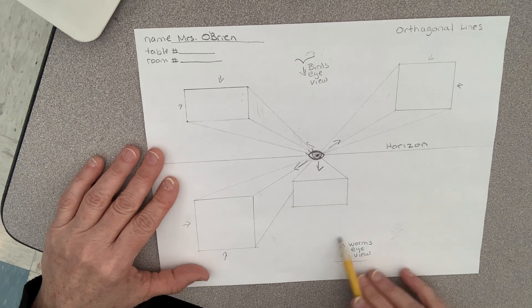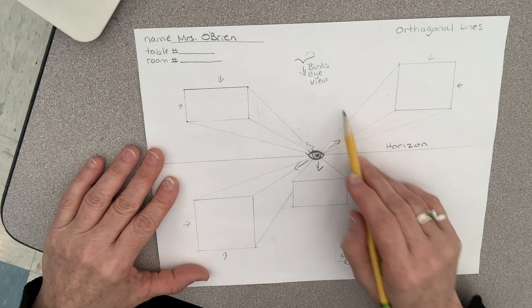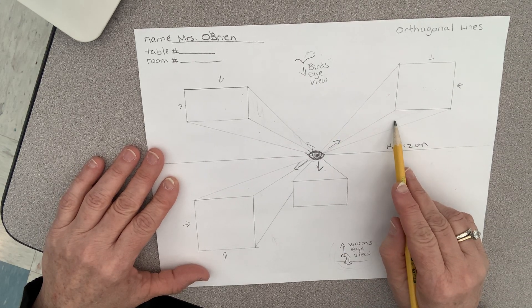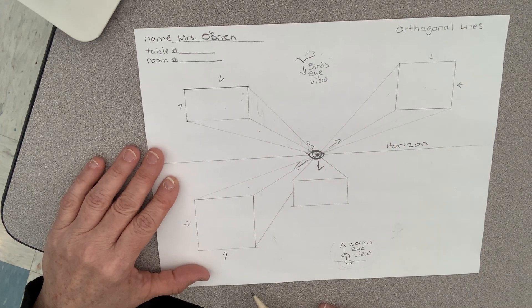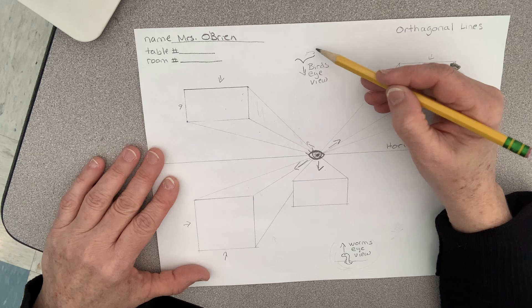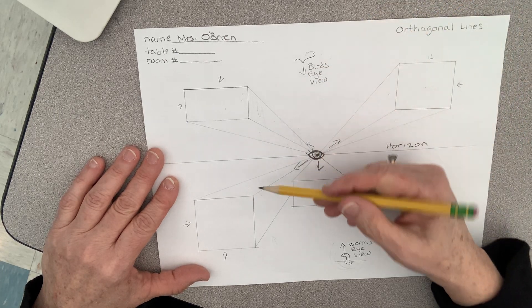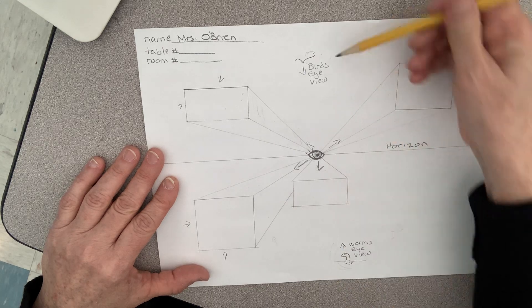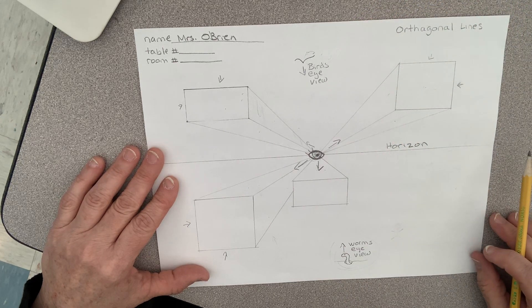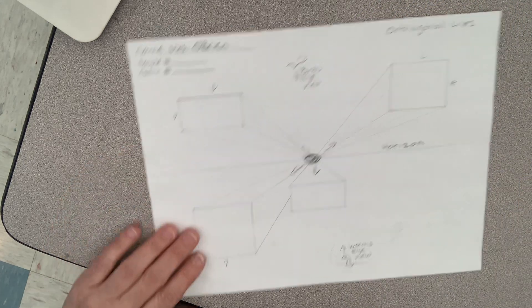This is called, if you're down here and you're looking up, it's called the worm's eye view because the worm would see the bottom of the boxes. If you're flying around up here and you're looking down, you see the tops of the boxes, and that's called a bird's eye view.